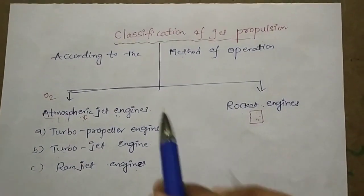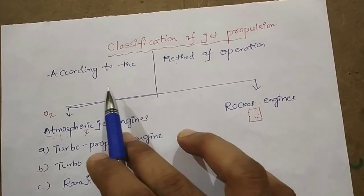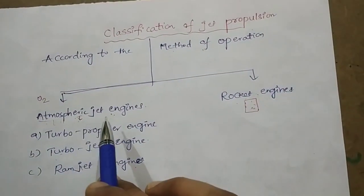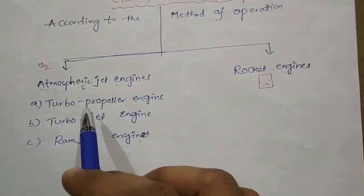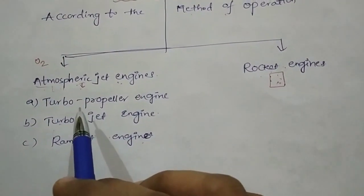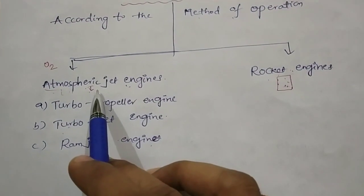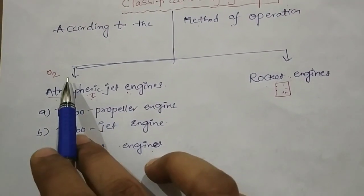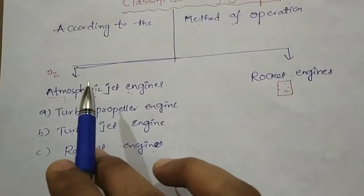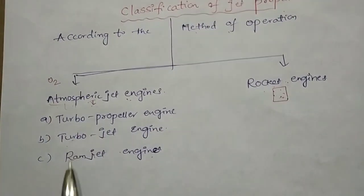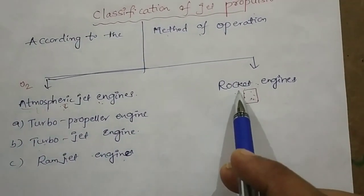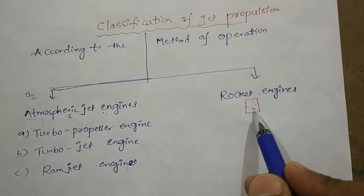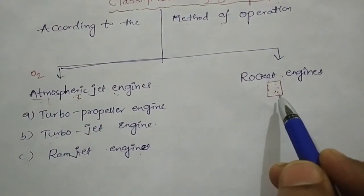Turbo propulsion engines are classified into two types: atmospheric jet engines and rocket engines. Atmospheric jet engines take the atmospheric air — whatever oxygen is required for combustion — from the atmosphere. Rocket engines already have oxygen contained in oxygen cylinders.